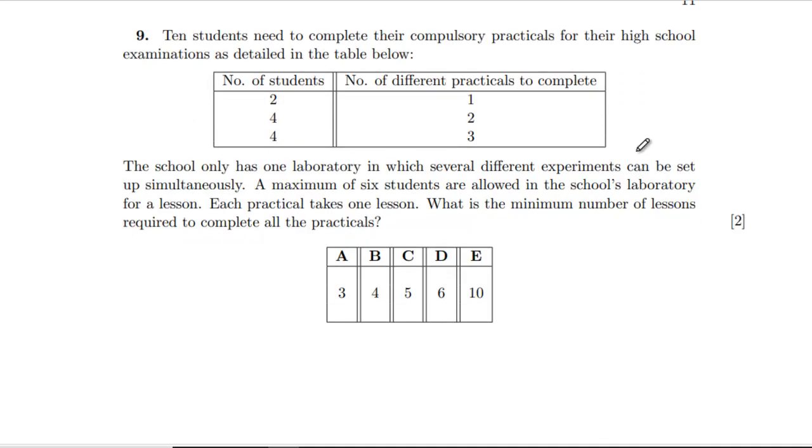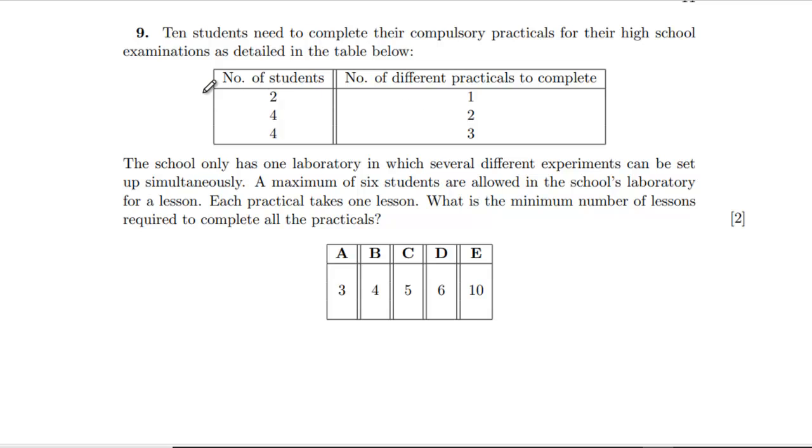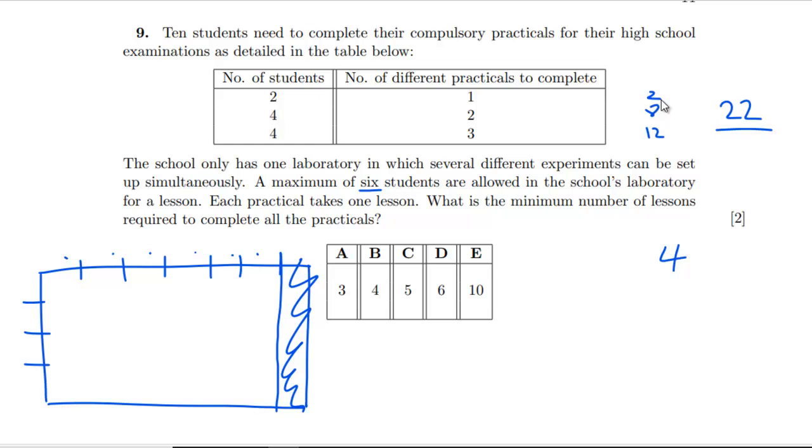Ten students need to complete their compulsory practicals for their high school examinations. Two of them need to do one, four to do two, and four to do three. The school has only one lab in which several different experiments can be set up simultaneously. A maximum of six students are allowed in the school's lab for a lesson. Each practical takes one lesson. What's the minimum number of lessons? How many practicals have we got? We got 2, then 8, then 12, so we've got 22 all in all. We can do 6 at a time, so on the face of it, that's going to be four.